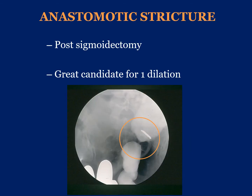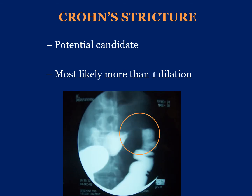The next few slides demonstrate case illustrations. This patient after sigmoid resection for diverticulitis presented with a very short stricture — a great candidate for one dilatation. In fact, this patient completely resolved symptoms after a single dilatation. This patient with Crohn's disease has a longer stricture and is still a potential candidate, but it's important to counsel the patient that more likely than not, more than one session will be needed to dilate the lesion.